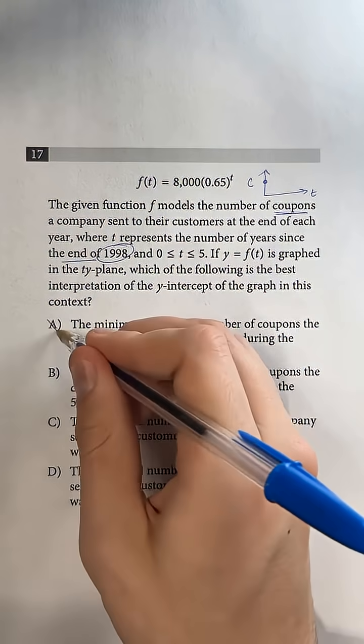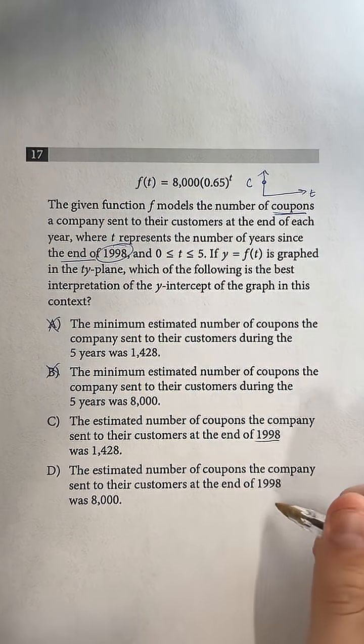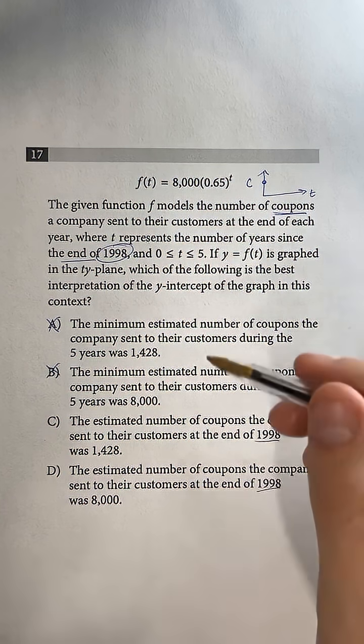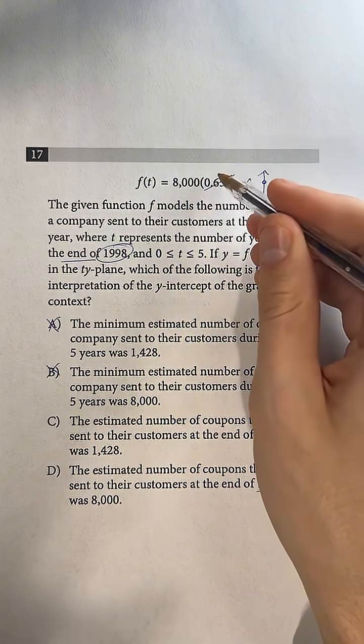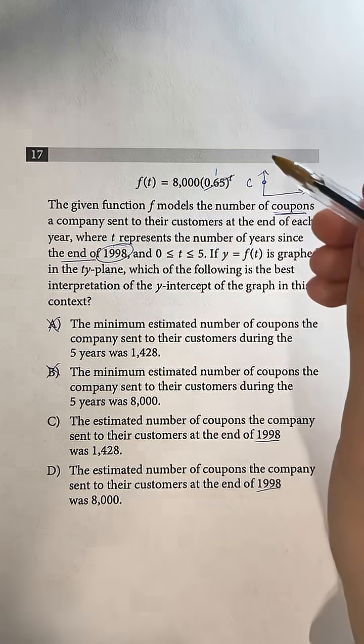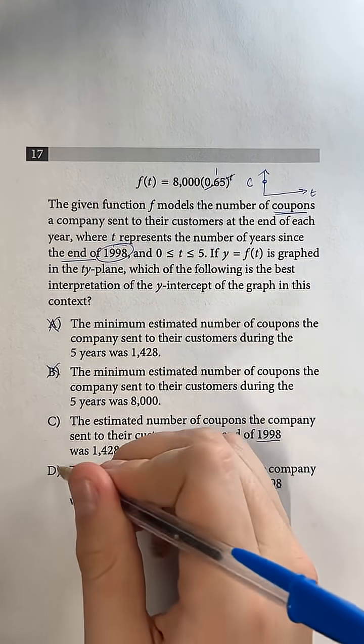We can see that that is going to eliminate a and b. We know it's going to be c or d because it's something about 1998, but if we actually plug in a 0 for t up here, this is going to go to 1, so we'll multiply 1 times 8,000, and the number of coupons is actually going to be 8,000, so the correct answer is going to be d.